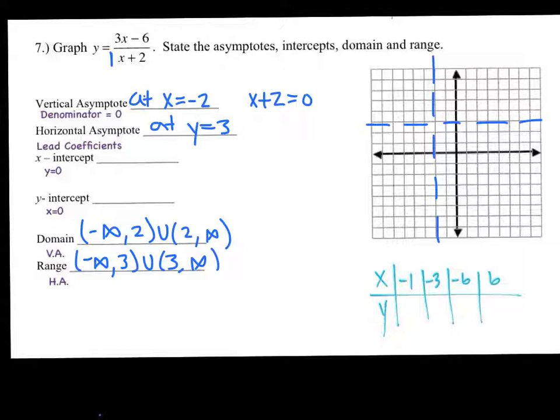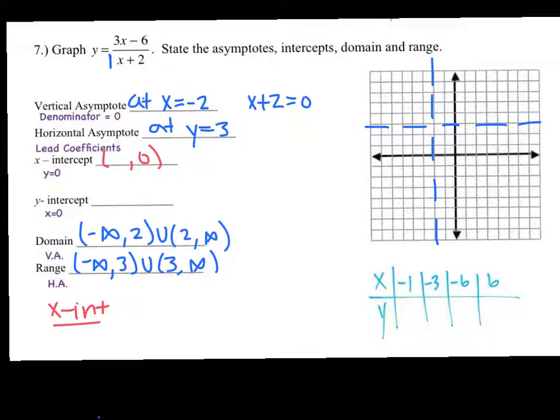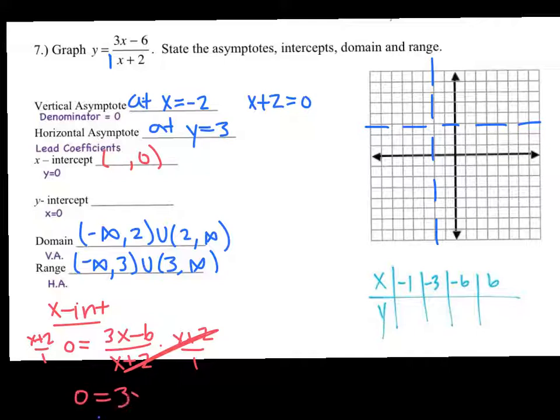Now the x and y intercepts. If we're trying to find the x intercept, that's when you're finding x, which means you're plugging in 0 for y. So I'm going to make this 0 equals 3x minus 6 over x plus 2. Some people like to cross multiply. I just like to multiply by the denominator over 1, but you have to do it to both sides. This leaves you with 0 equals 3x minus 6. So you would add the 6 over and divide by 3. So 6 divided by 3 will give you 2.